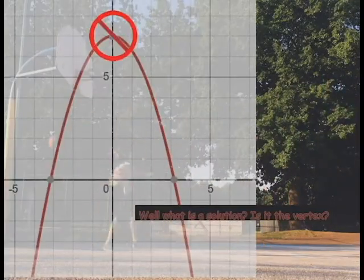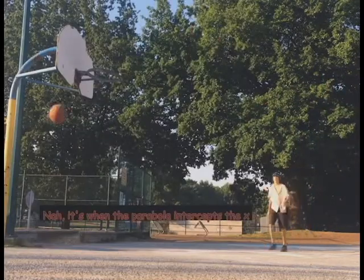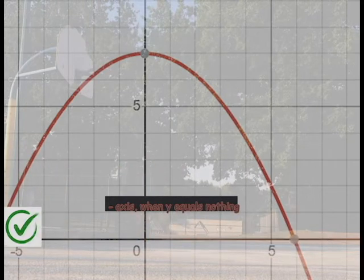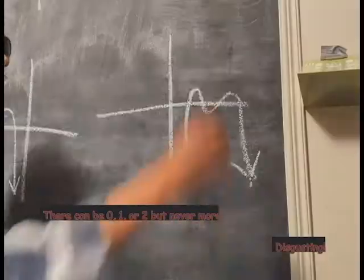What is a solution? Is it the vertex? No, it's when the parabola intercepts the X axis. When Y equals nothing, there can be zero, one, or two, but never more. Disgusting!